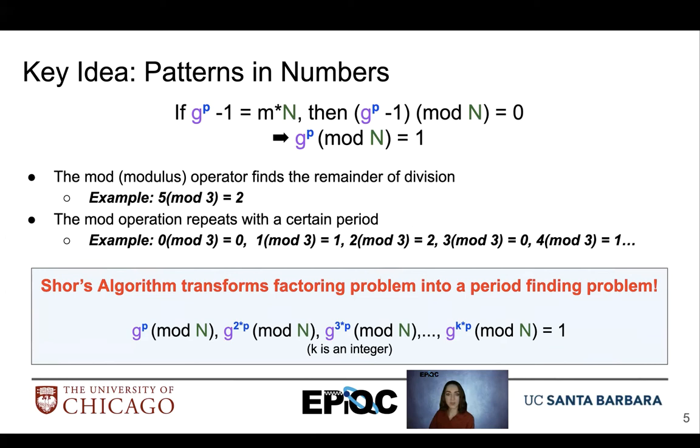So if we look at this equation that we just defined up here, we know that if we have p times some multiple value, so here we have g to the p mod n, g to the 2p mod n, g to the 3p mod n, and so on, to sum of exponent k, that's an integer, we will have all of these equal to 1. So we have this repetition that is seen with the modulus operation.